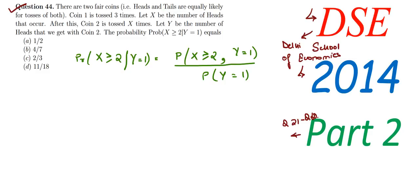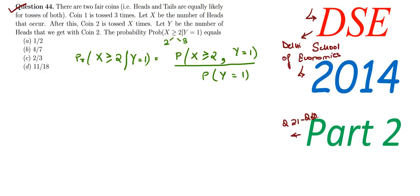As I said, X ≥ 2 means X can be either 2 or X can be 3. So let us break this statement into two parts.